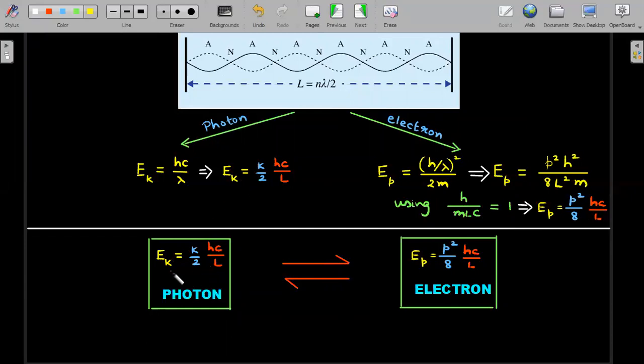You end up getting Ep is equal to p squared by 8 times the same currency that I used in the photon situation. Now you realize the kth harmonic of photons forming standing waves is given by this expression, and pth harmonic of electron is given by this expression.